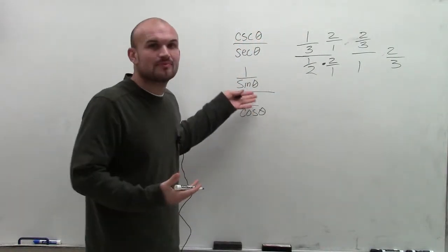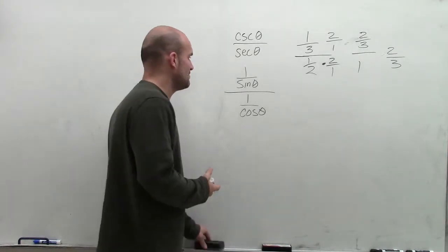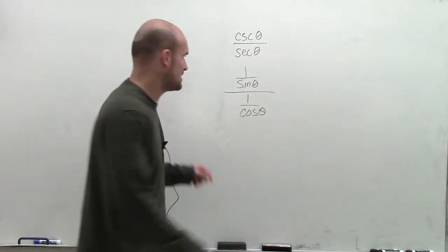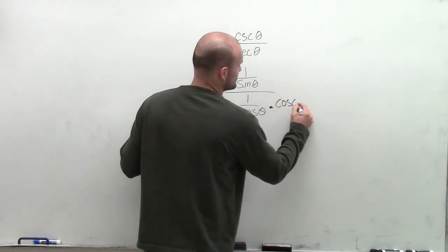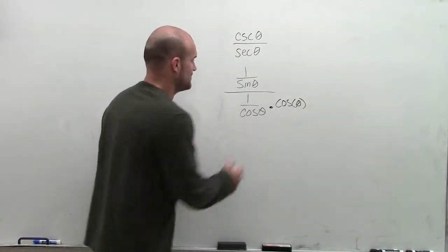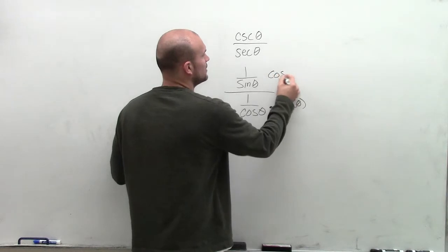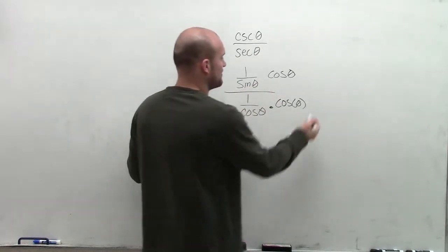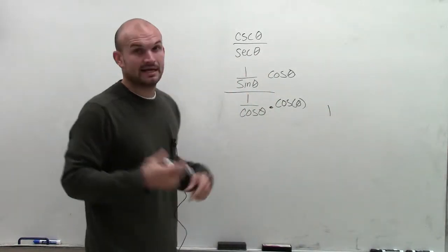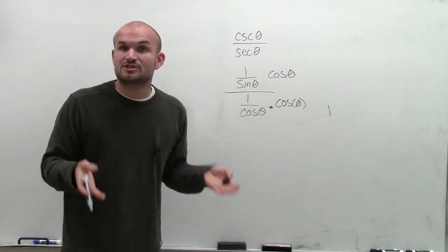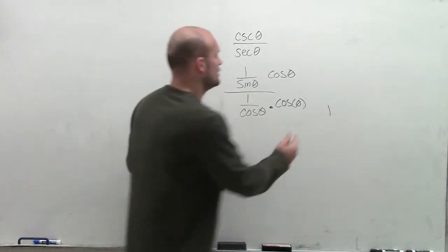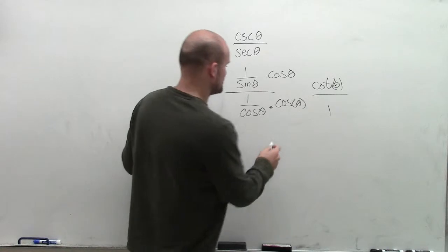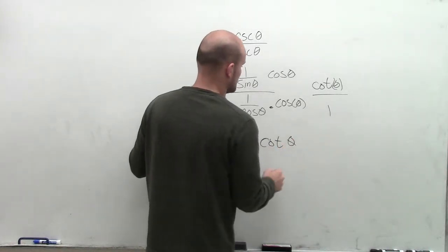So that's the same kind of thinking I want to do for this problem — multiply by the reciprocal. The reciprocal of 1 over cosine of theta is just cosine of theta. So I multiply by cosine of theta on the top as well. Well, 1 over cosine times cosine equals 1, and then cosine of theta over sine of theta — which by our quotient identity is cotangent of theta. So now I have cotangent of theta divided by 1, which simply leaves me with a final answer of cotangent of theta.